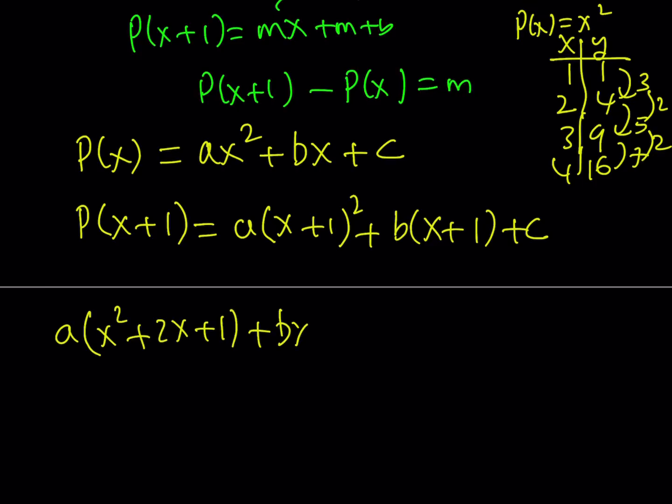And then here you get BX plus B plus C. And I'm going to subtract AX squared, BX, and C from this. And the answer is supposed to equal X.